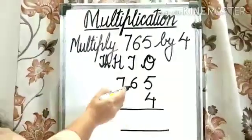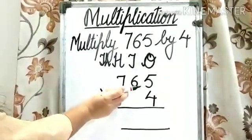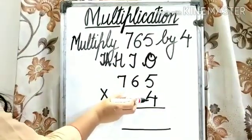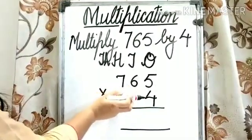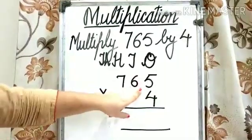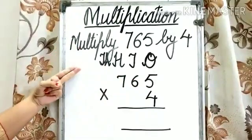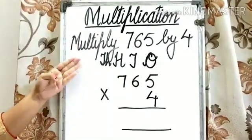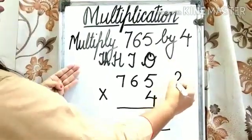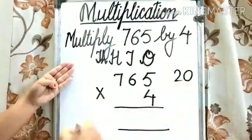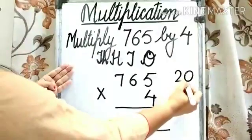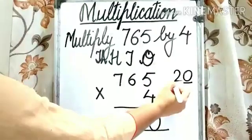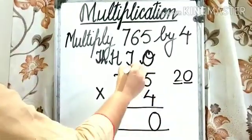Step 1: multiply the digit at the 1s place by 4, meaning we need to multiply 5 by 4. 5 4s are 20. So write down 0 under the 1s column and carry over 2 to the 10s place.